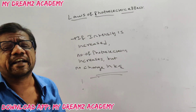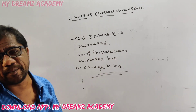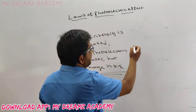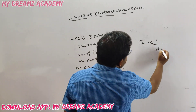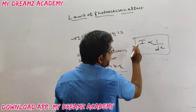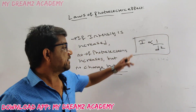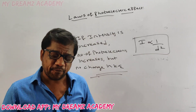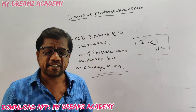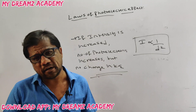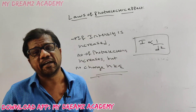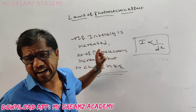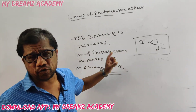Also note: intensity is inversely proportional to d-squared, where d is the distance between the light source and the metal. If intensity is doubled, the number of photoelectrons will be doubled. If intensity is four times greater, the number of photoelectrons will also be four times greater — it is a direct relationship, not 'more than double'. I am expecting a hundred percent question based on these two laws.